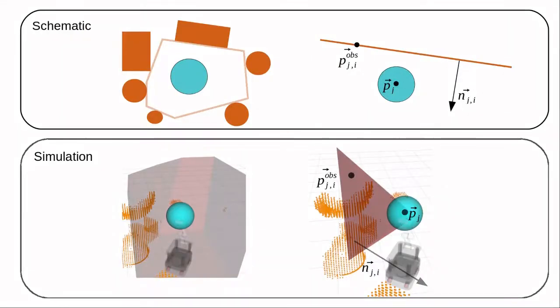To limit the number of inequality constraints as environments become more cluttered, we propose to represent the free space directly based on point clouds rather than individual obstacles.